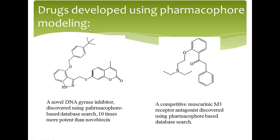Coming to drugs developed using Pharmacophore modeling: one example is a novel DNA gyrase inhibitor discovered using Pharmacophore-based database search, which is 10 times more potent than Novobiocin. Another example is a competitive muscarinic M3 receptor antagonist discovered using Pharmacophore-based database search.